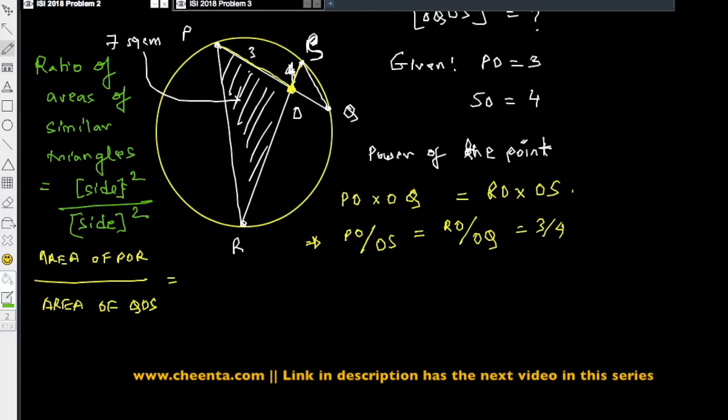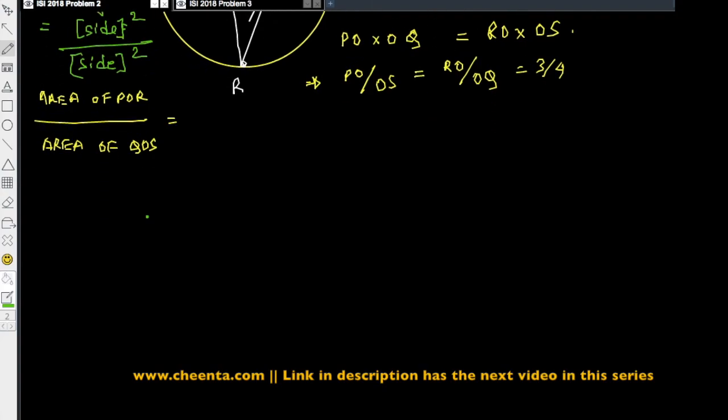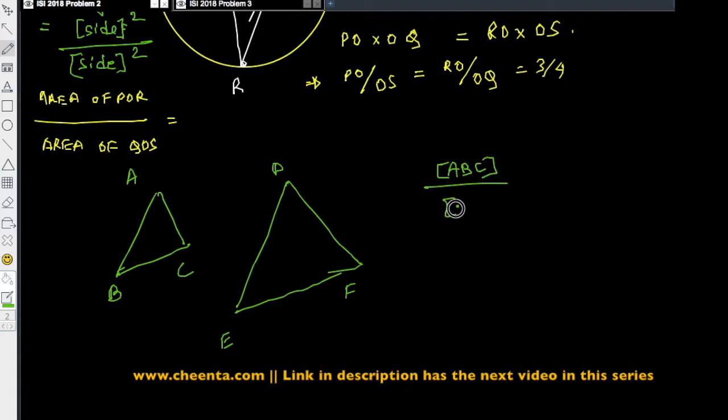So let me give you an illustration of this fact. Because once you understand this particular theorem, you basically finish off the problem pretty easily. So suppose we have two similar triangles. One of them is ABC. One of them is DEF. Then, area of triangle ABC and area of triangle DEF, their ratio, will be equal to square of the corresponding side. So suppose these two angles are equal. Then the corresponding sides will be these two sides. So it is AB square over DE square.